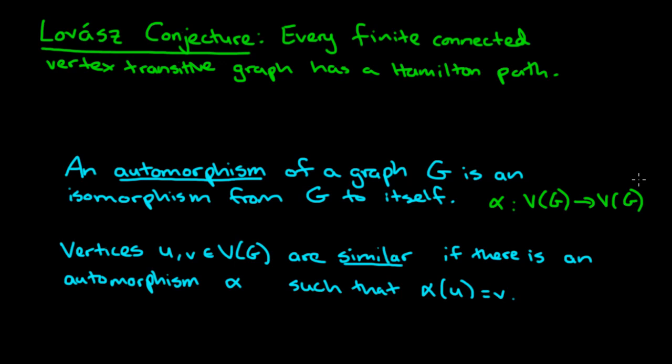You think about having an isomorphism alpha which takes you from the vertices of graph G to the vertices of graph G. If you have such an isomorphism, it is referred to as an automorphism. If you can map a vertex u in the graph to a vertex v, then we think of u and v as being alike. In other words, they are called similar. Two vertices are similar if there is an automorphism alpha which maps u to v.